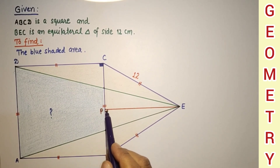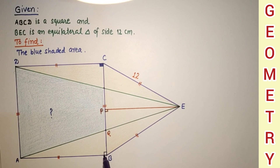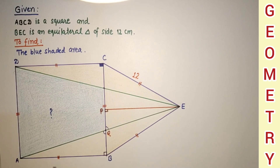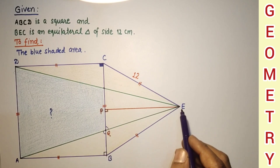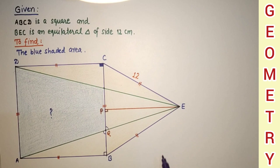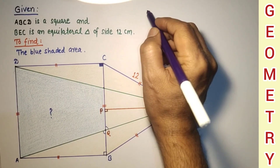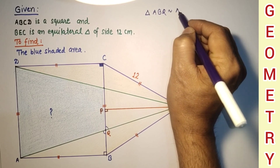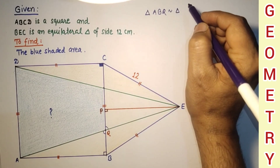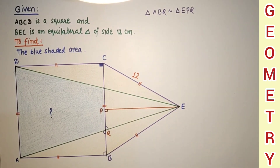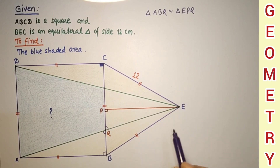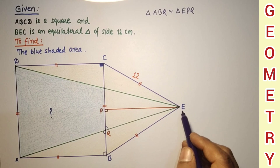This angle is 90 and this angle is 90. These are vertically opposite triangles, so triangle ABQ and triangle EPQ are similar by the AA test of similarity. Since these two triangles are similar, their corresponding sides will be in the same proportion.